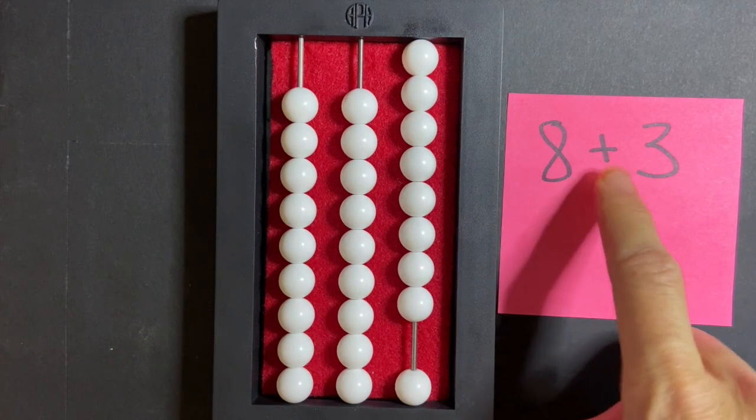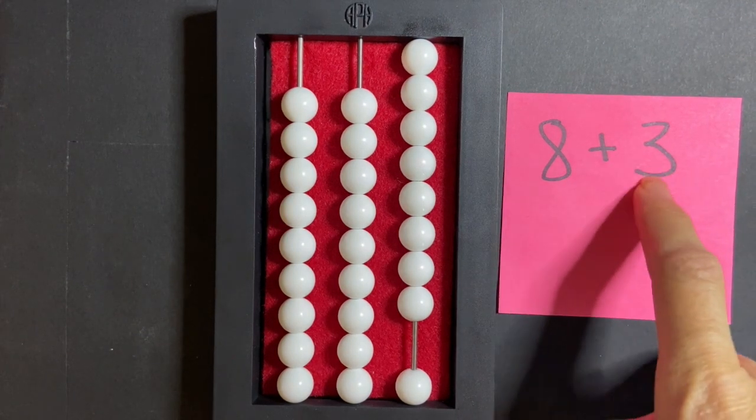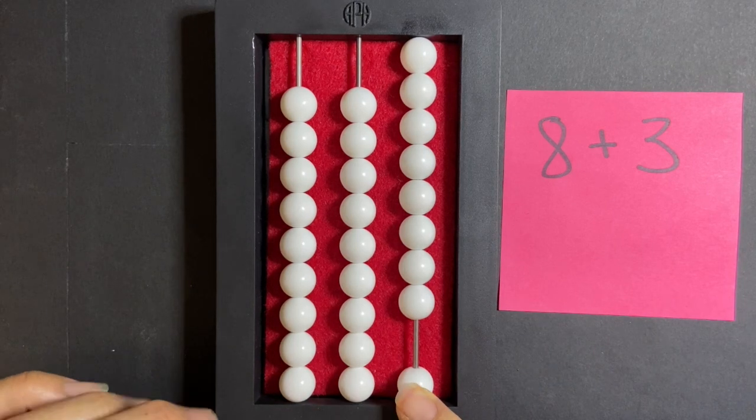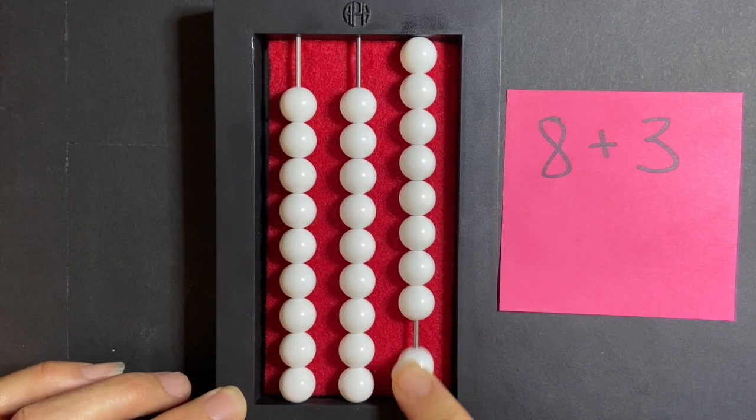So my first addend was 8 and I want to add 3 to that, that's my second addend. So what am I going to do? So I start here by pushing one more bead up and counting that bead as one.